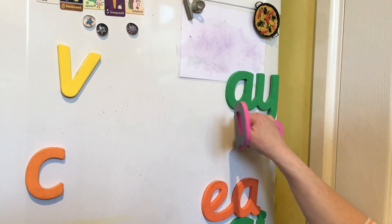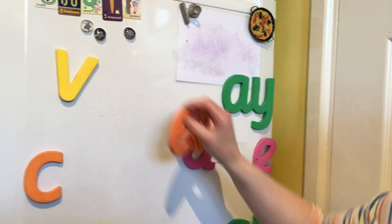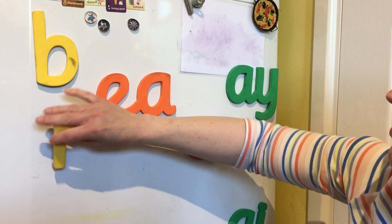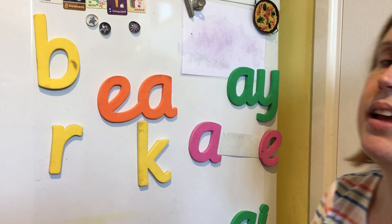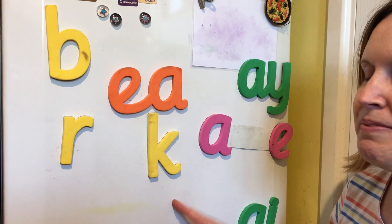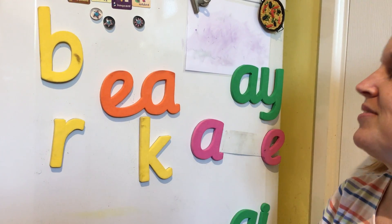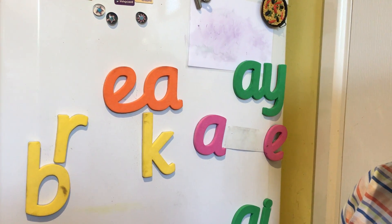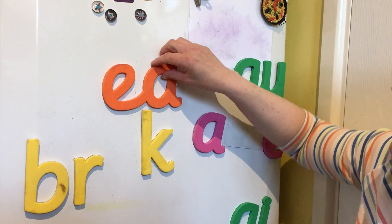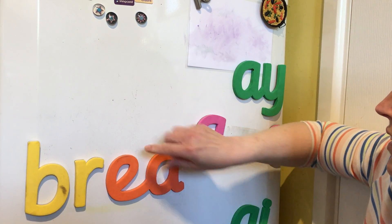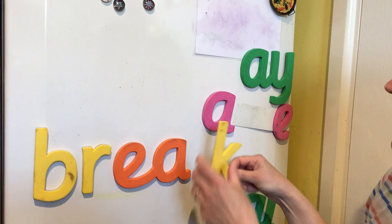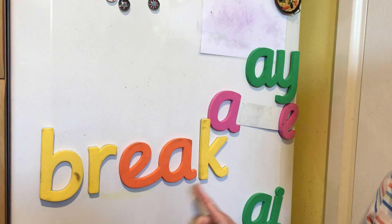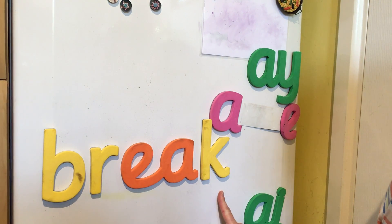The last one we're going to do today is with the very strange spelling of A. That's the word I think Florence is quite familiar with — it's the word 'break.' Break. What's it start with? And then we need our A sound — this time we're going to spell it like this. Break.